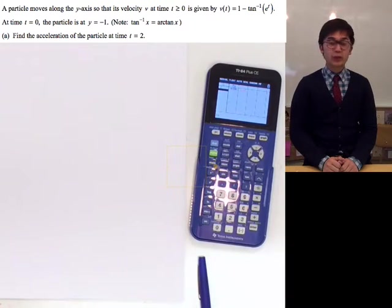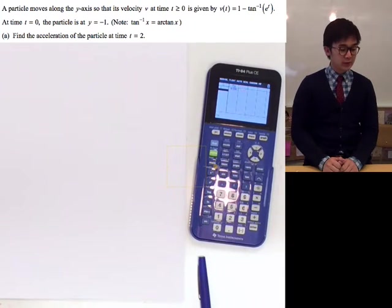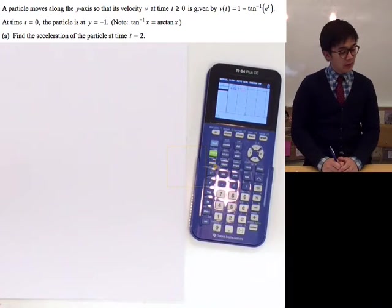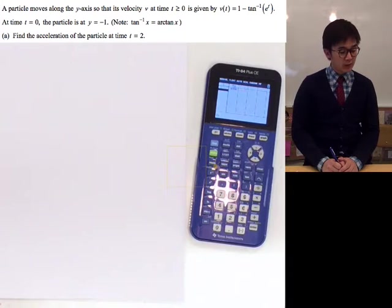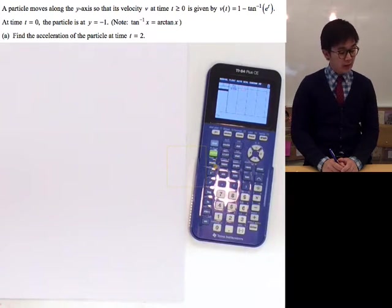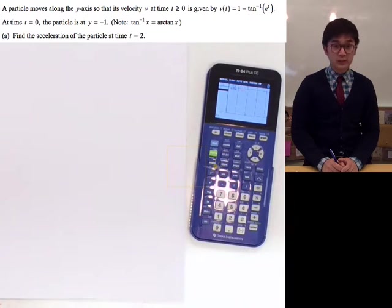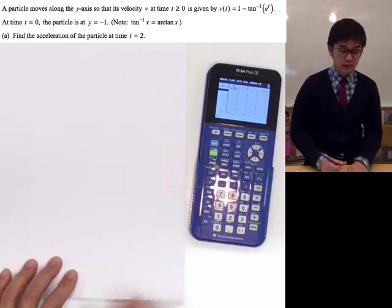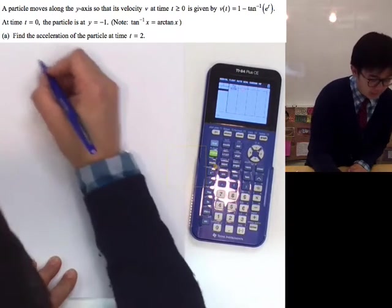Today we're going to be answering an FRQ from 2004, question number 3. From this FRQ, we are given the velocity function, which is 1 minus 10 inverse tangent of e to the t, and we're also given the position of the particle at t equals 0, which is y equals negative 1. So let's go ahead and write it down.